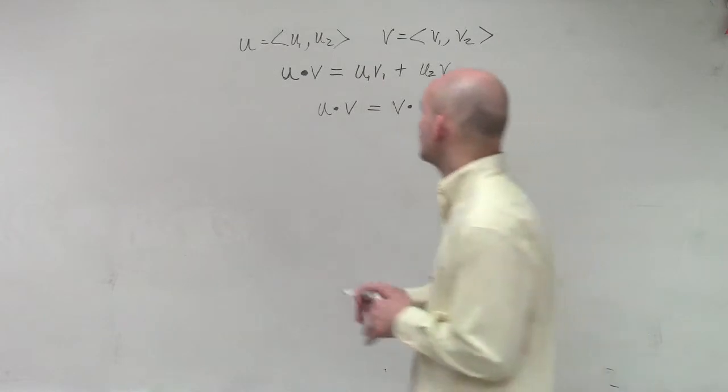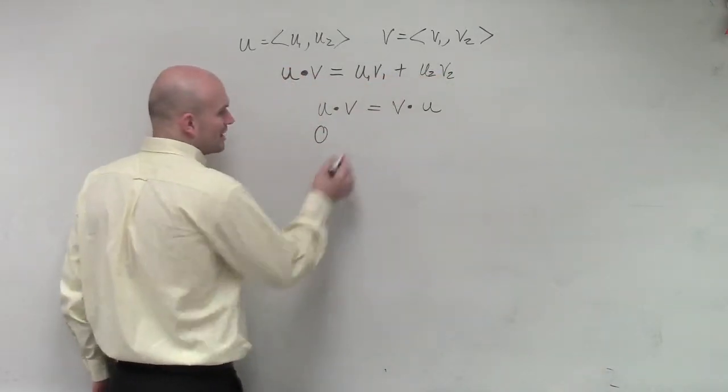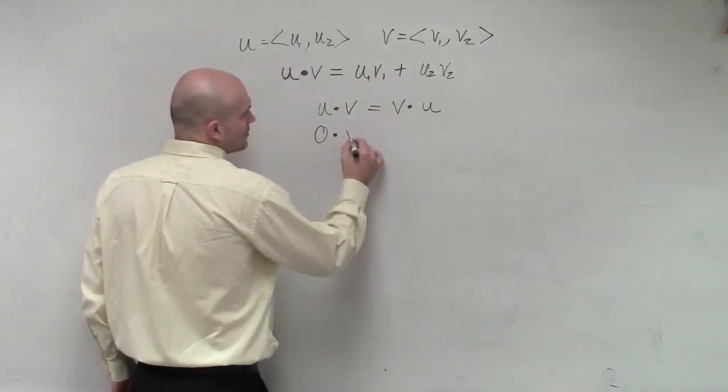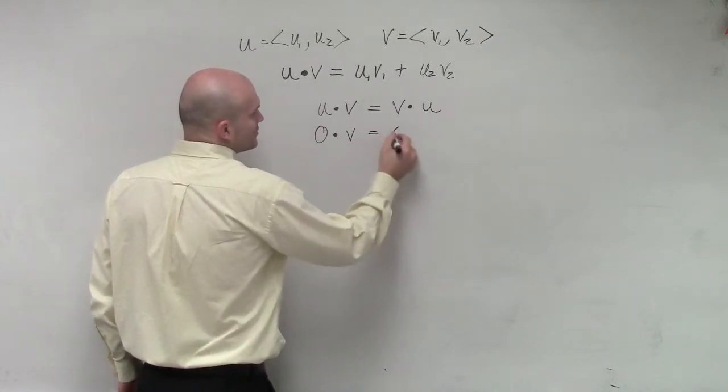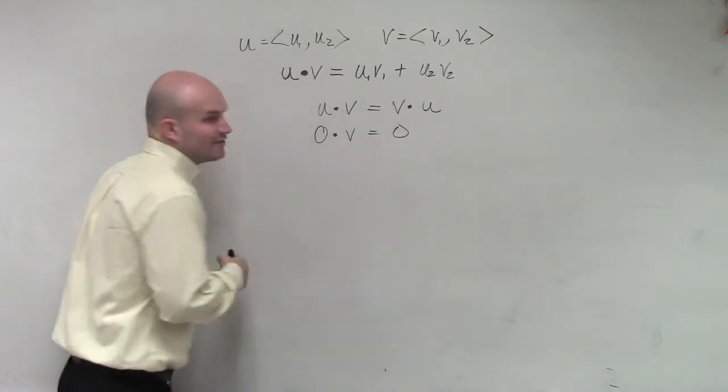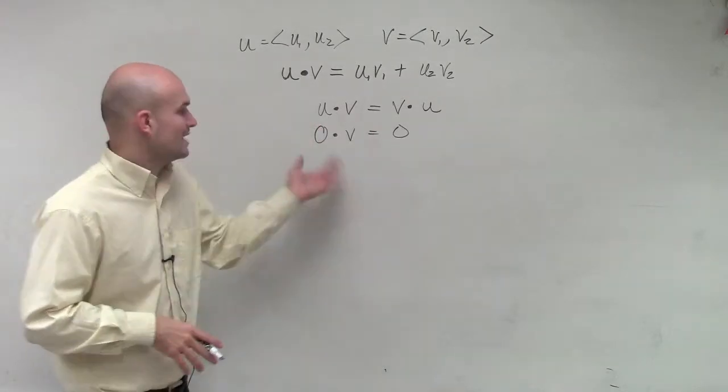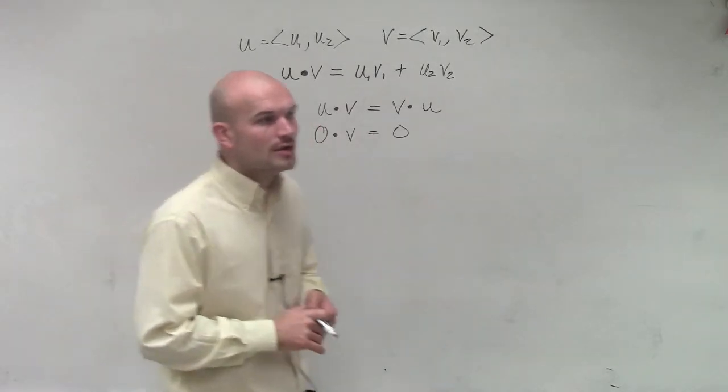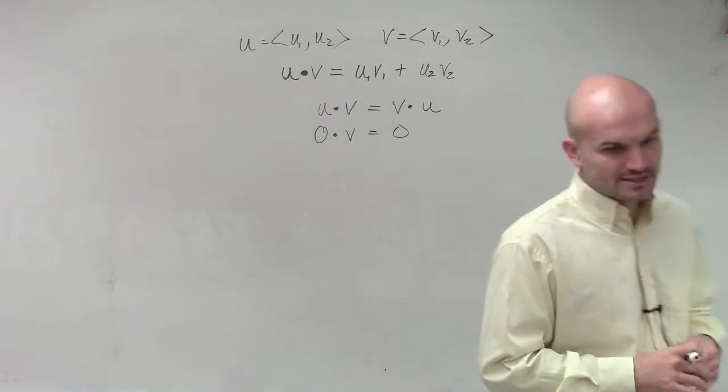The next one that we can work on is if I have the dot product with 0 times v, that equals 0. Where v could be any vector. But any time you use the dot product of 0, you're going to also get 0.